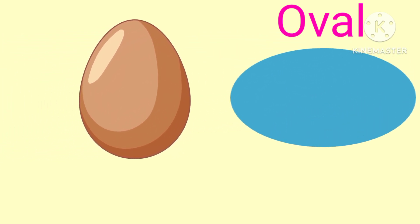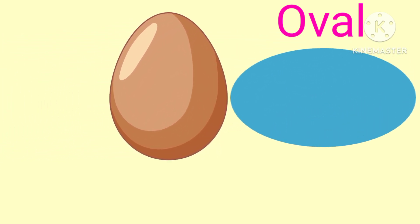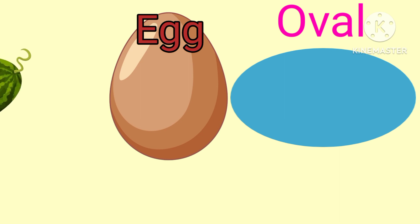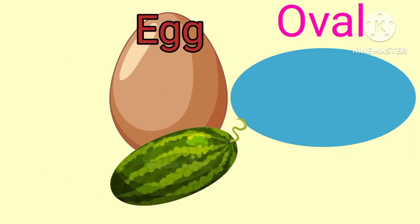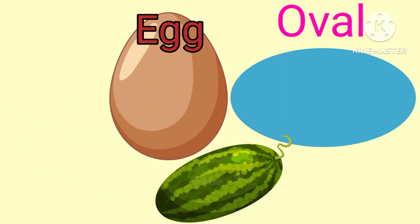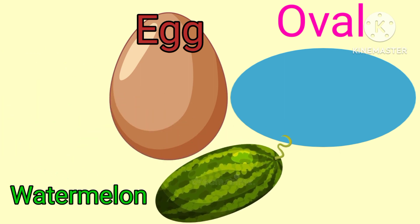Oval. An egg and a watermelon are examples of an Oval.